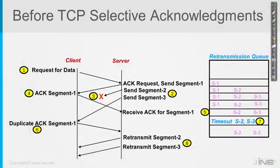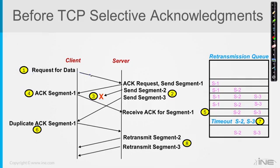Let's walk through each one of these steps. In step number one, the client sends some sort of a request, like an HTTP request or similar. In step number two, we have multiple things going on at one time. The server sends a segment — this first line is one segment, the first segment of data — and in the Acknowledgement field, it's acknowledging the request.